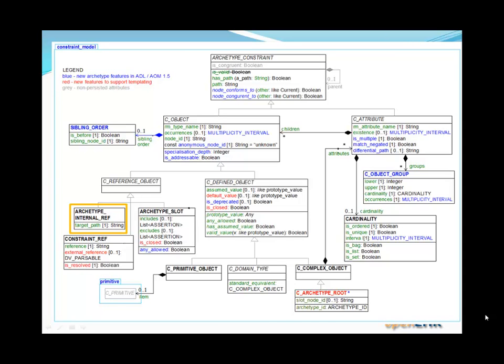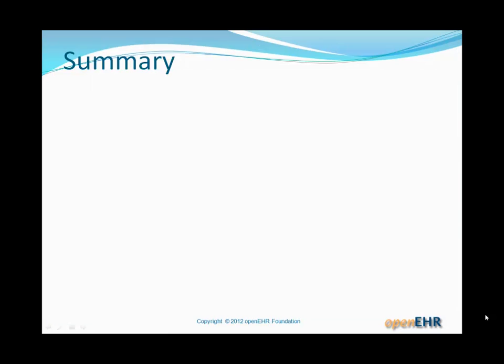In the AOM, the Archetype_Internal_Ref class is very simple — it just contains a target path indicating where else in the same archetype to find the object constraint that the path refers to.